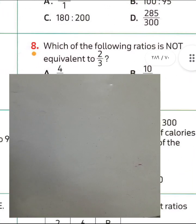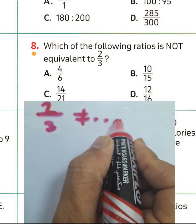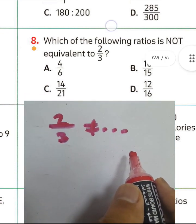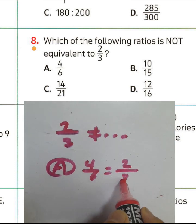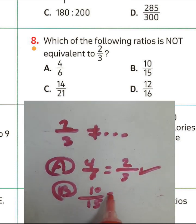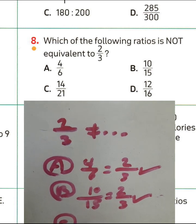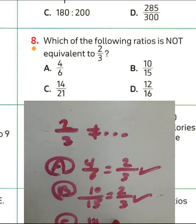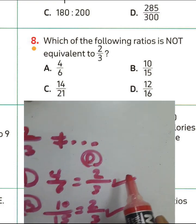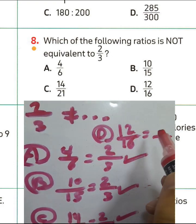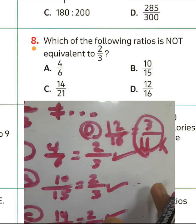Question number 8: which of the following is NOT equivalent to 2 over 3? Letter A: 4 over 6 divided by 2 equals 2 over 3 — true. Letter B: 10 over 15 divided by 5 equals 2 over 3 — true. Letter C: 14 over 21 divided by 7 equals 2 over 3 — true. But letter D is false: 12 over 16 divided by 4 equals 3 over 4, not 2 over 3. So choose letter D.